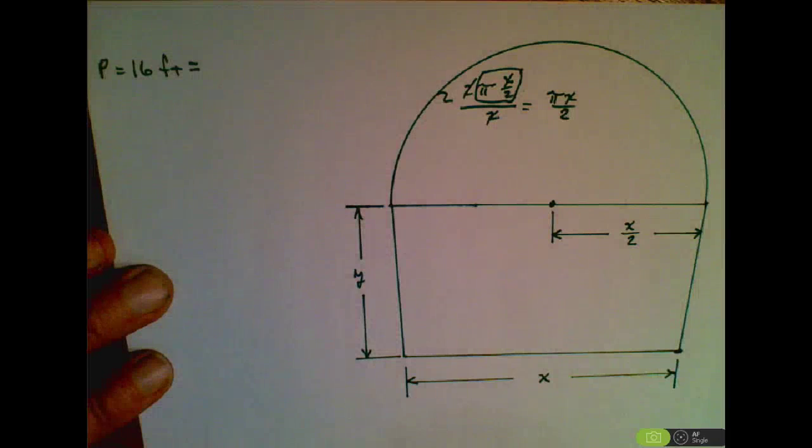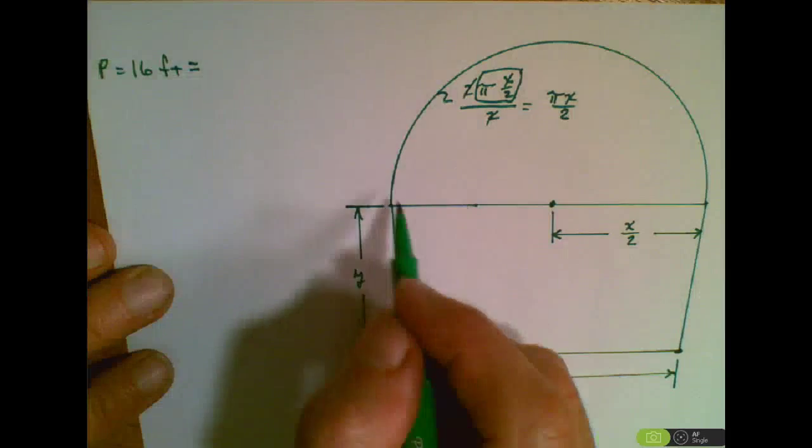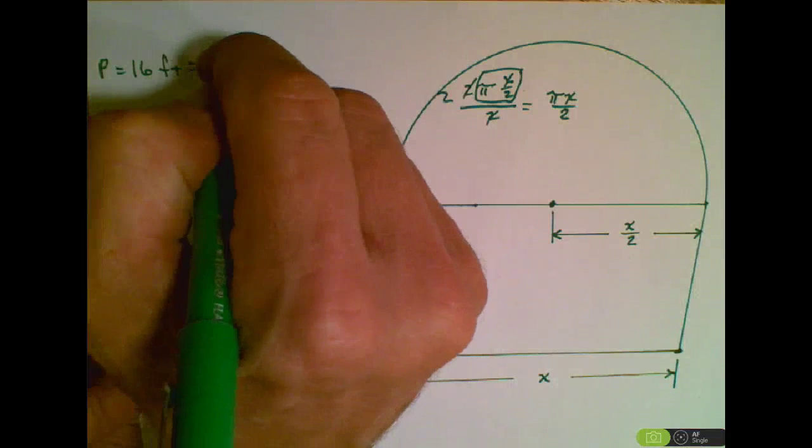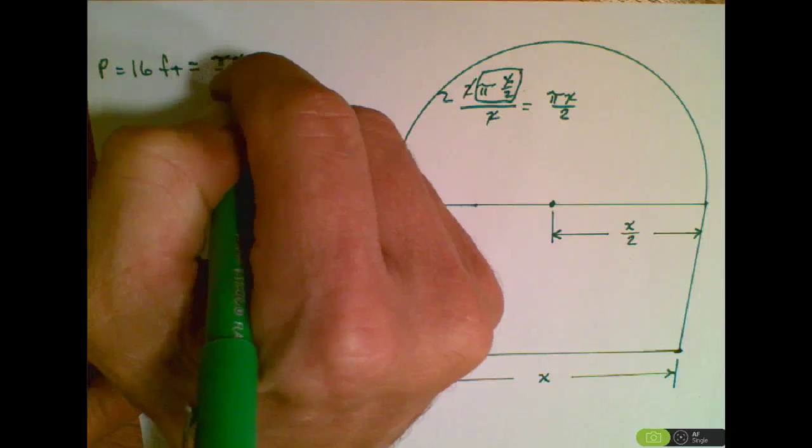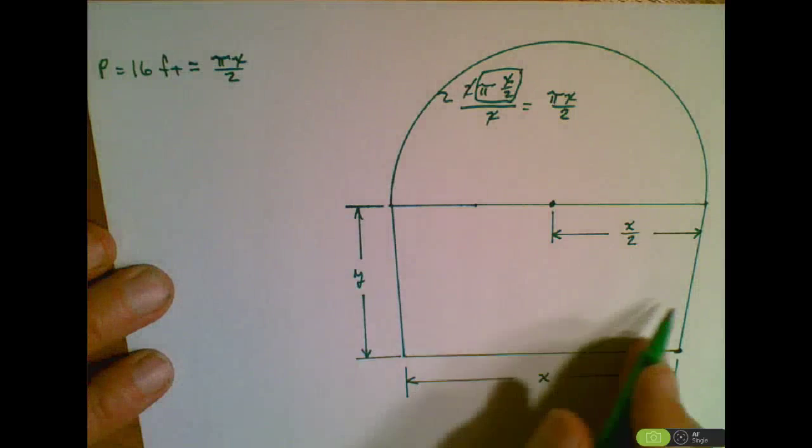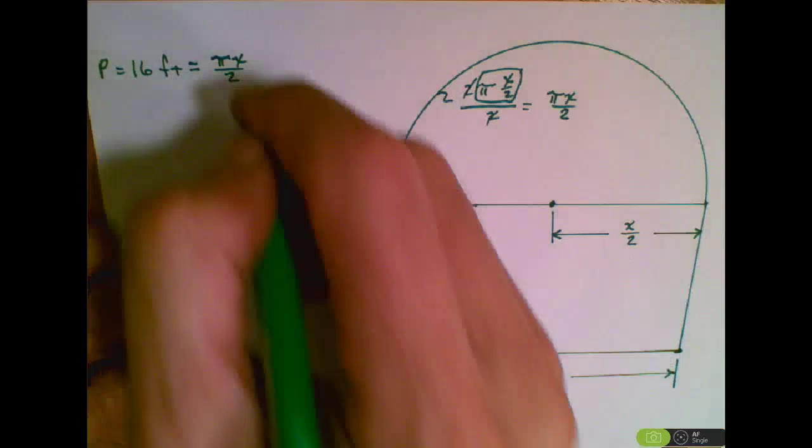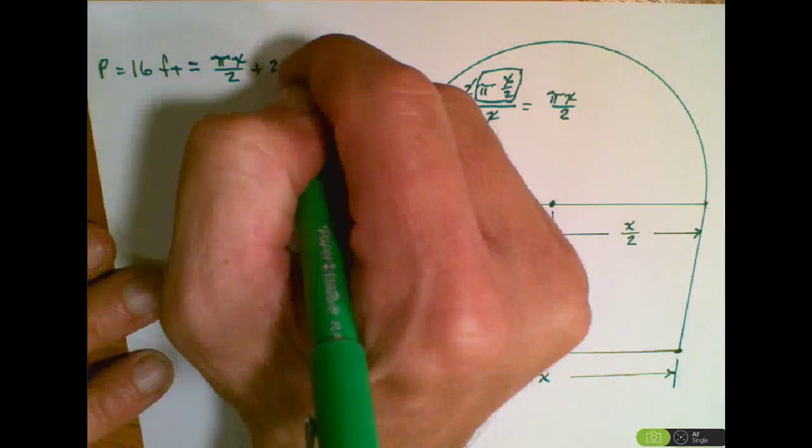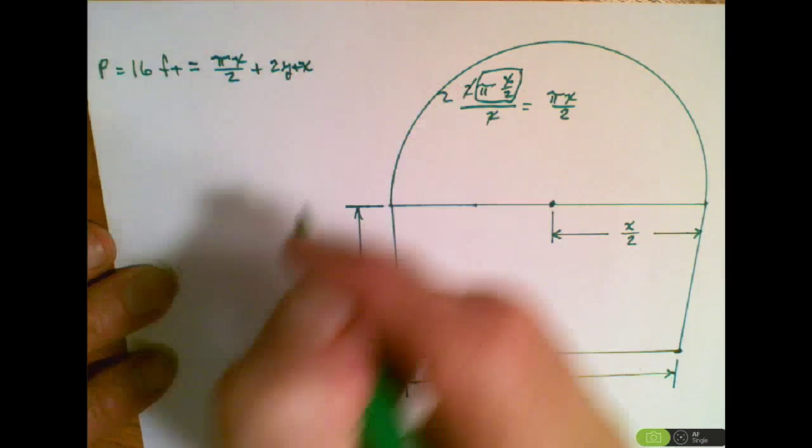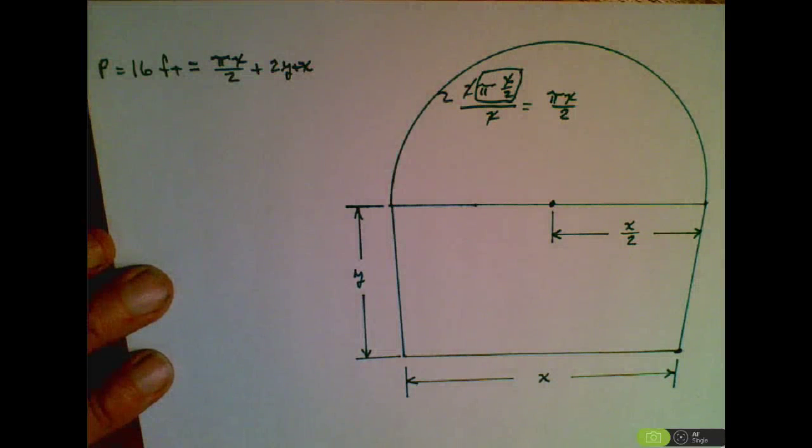So we take 16 feet, which is made up of that semicircle, which is πx/2. We have 2 y's here, this side and the other side, plus 2y. And then finally we have an x, plus x. So the perimeter is πx/2 + 2y + x.